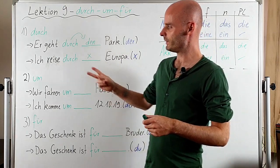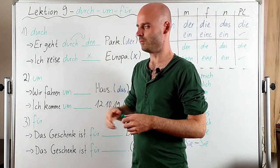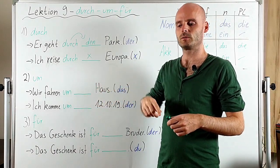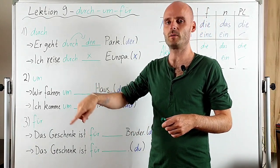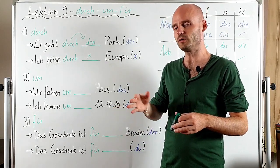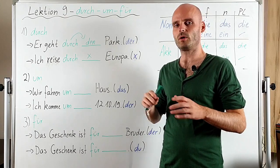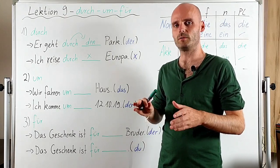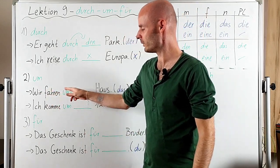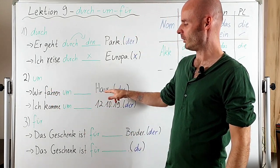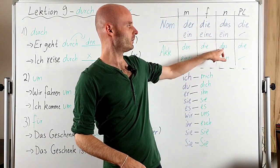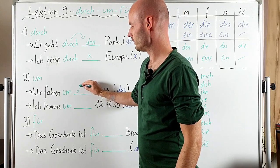Then we have the second preposition — that is 'um,' and 'um' means 'around.' For example, 'I go around the table,' or with dates: 'I will see you around the twelfth of October' — meaning approximately. 'Wir fahren um das Haus' — 'Haus' is 'das,' and in accusative it's also 'das,' so that's easy.